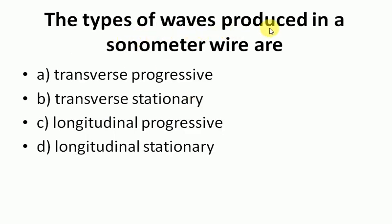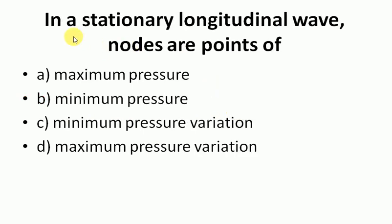The type of waves produced in a sonometer wire are transverse stationary waves. In a stationary longitudinal wave, nodes are points of maximum pressure variation.